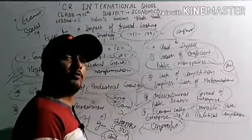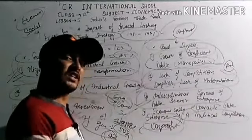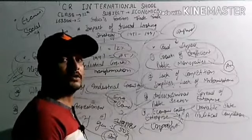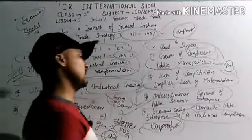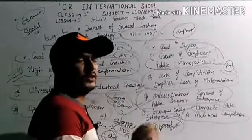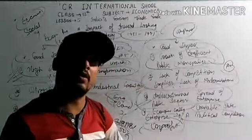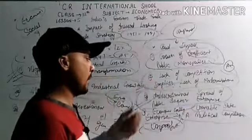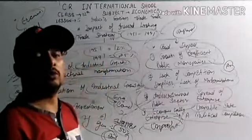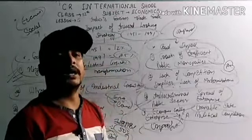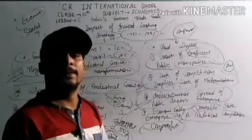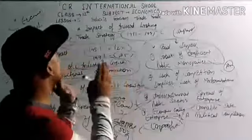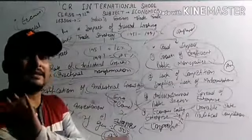To summarize, after 1991, people rejected the old type of cars and old technology as foreign products became available. These are all the good and bad impacts of the inward looking trade strategy. Thank you very much. That lesson has been finished.